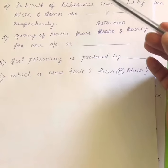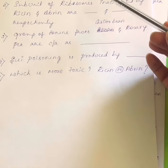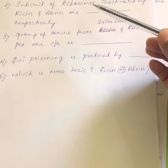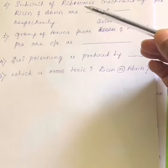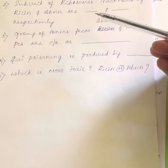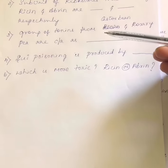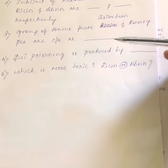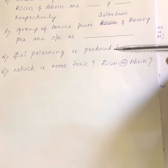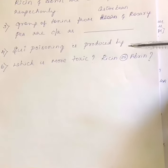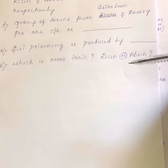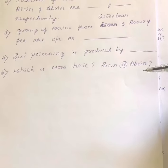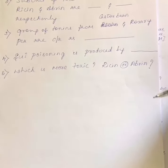Assignment questions: Ricin resembles ___ toxin; abrin resembles ___ toxin. Which subunits of the ribosome are inactivated by abrin and ricin respectively? What is the group of toxins from castor bean and rosary pea called? Sui poisoning is produced by ___. Which is more toxic — ricin or abrin? Please complete and submit.